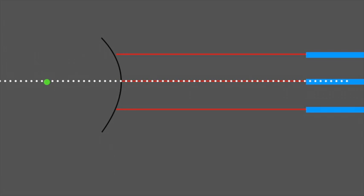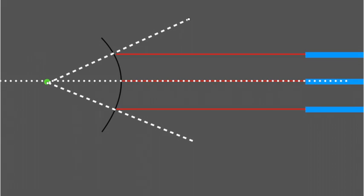It is called the center of curvature. This means that any line drawn from the center to the mirror—as I've got here, the two white dotted lines—are radii and meet the surface of the mirror at right angles.